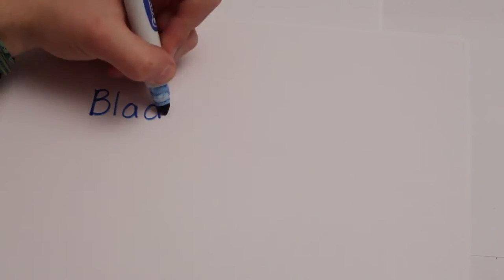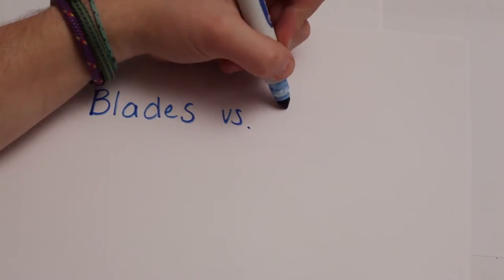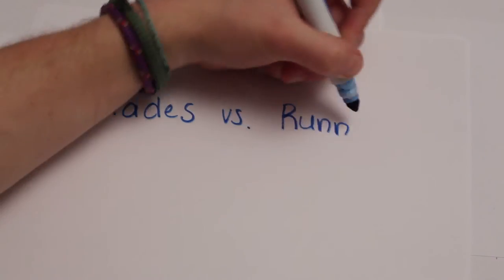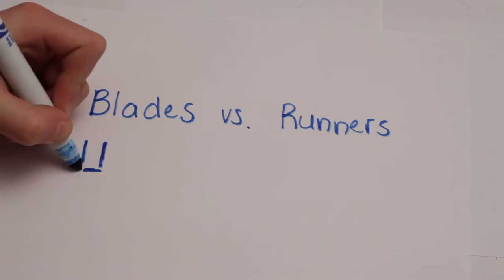Friction. Contrary to popular belief, bobsleigh, luge, and skeleton do not use blades to glide down the track. They all use thin metal runners, but they are not sharpened like blades are - they are actually incredibly smooth.